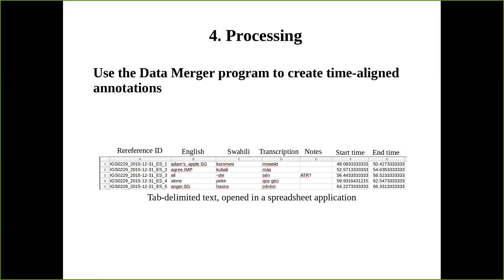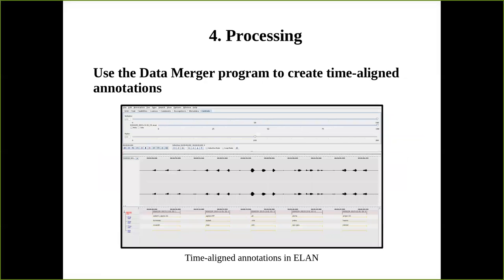The final output is an EAF file used by Elan, which is especially useful if you want to create a corpus of your data. As soon as you're done processing, you can add it to a corpus together with all your other data and search across all of it. A great feature of Elan is that you can integrate it with Praat — search for data in Elan, select the audio, and open it directly in Praat. It's very fast and very efficient.